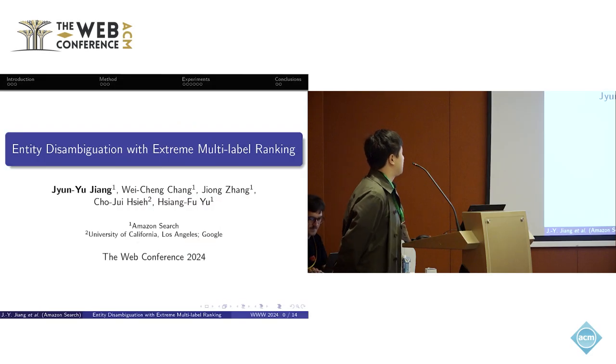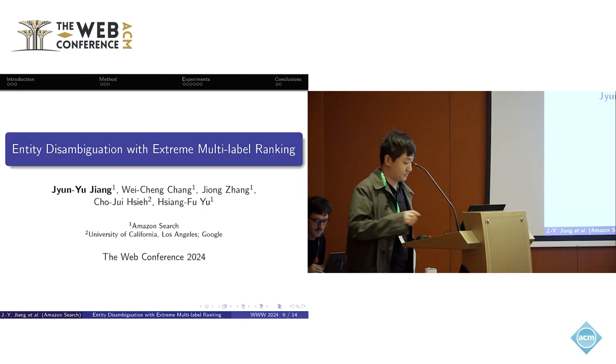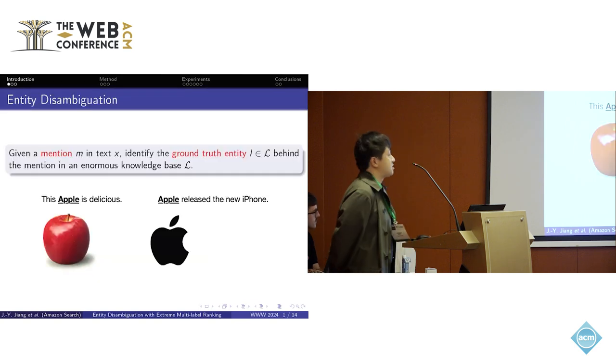This is a work as a collaboration with my colleagues Wei-Chen, Zhong, Zhou-Rei, and Xiang-Fu. This is about the conventional task of entity disambiguation. The definition of the task is that given a mention in text, we want to identify the ground truth entity behind the mention in a knowledge base.